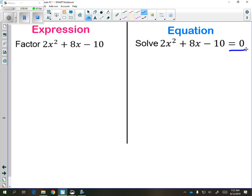To factor on the left, we're going to pull out the GCF of 2. And when we pull that out, we're going to be left with x squared plus 4x minus 5, and hopefully we realize that this can be factored again.